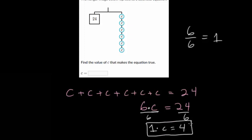We want to check: if each of the six c weights is 4, do they combine to give us 24? Four plus four plus four plus four plus four plus four: that's 4, 8, 12, 16, 20, 24. Yes, it checks out. So we can conclude that c is equal to 4.